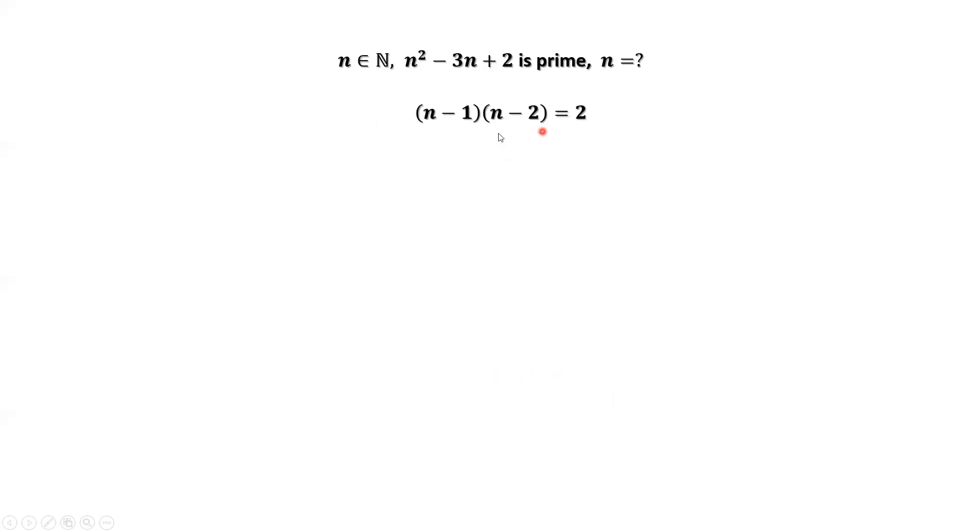Expand the left-hand side. We have n squared minus 3n plus 2 equals 2. Continue to simplify. Then we have n squared minus 3n equals 0.